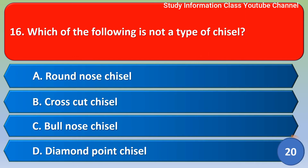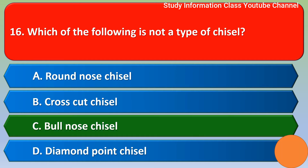Next question: which of the following is not a type of chisel? Options: round nose chisel, cross cut chisel, boldness chisel, diamond point chisel. The correct answer is option C, boldness chisel.